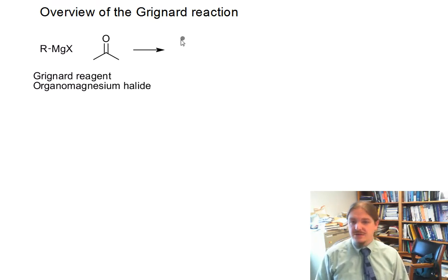And these Grignard reagents are nucleophiles. So they react with carbonyl electrophiles to form new bonds at the carbonyl carbon. And because our nucleophile is a hydrocarbon group, we're actually forming a new carbon-carbon bond.